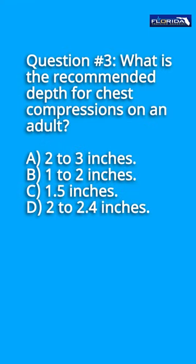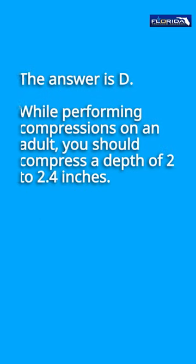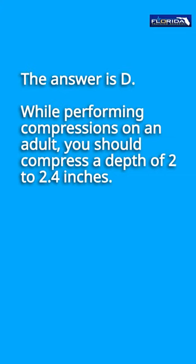Question number 3: What is the recommended depth for chest compressions on an adult? A. 2-3 inches. B. 1-2 inches. C. 1.5 inches. D. 2-2.4 inches. The answer is D. While performing compressions on an adult, you should compress to a depth of 2-2.4 inches.